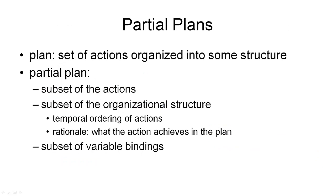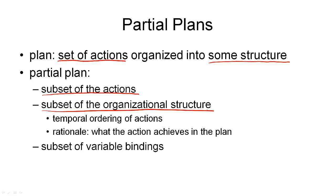So what is a partial plan? I'll answer this informally before giving the formal definition. A plan in general is a set of actions organized into some structure. In the planning we've looked at so far, this structure was always a sequence. But if a complete plan is a set of actions, then a partial plan could simply be a subset of those actions. Also, if the actions in a complete plan are organized into some structure, we could have a subset of that structure — for example, dropping some ordering constraints.